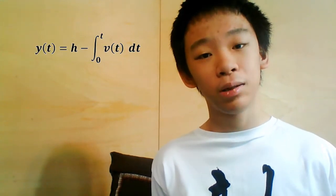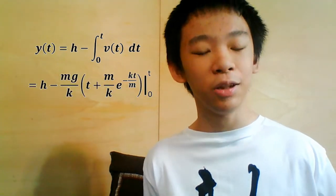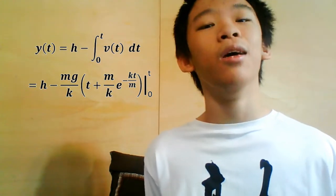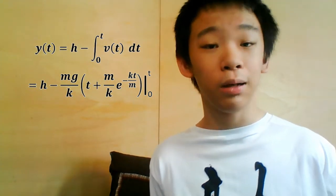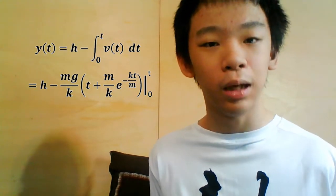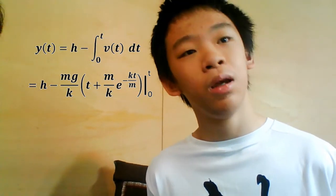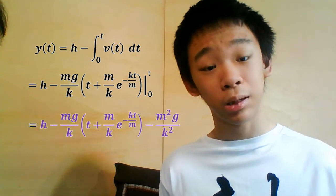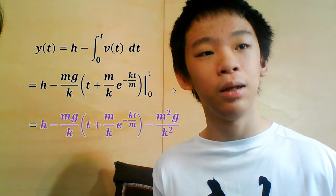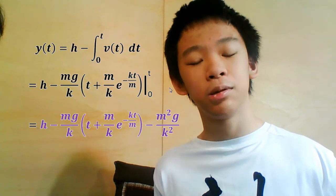Because we've set down to be the positive direction, to get the position we put a negative in front to match the direction. We then integrate v(t) from 0 to t and add the starting height h. So we get y(t) equals h minus the integral from 0 to t of v(t) dt. Integrating mg over k times (1 minus e to the negative k over m times t), we get that the y position as a function of time is h minus mg over k times t plus m over k times e to the negative kt over m plus m squared g over k squared.